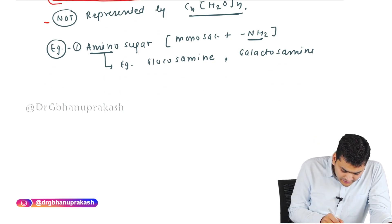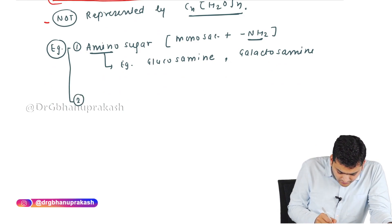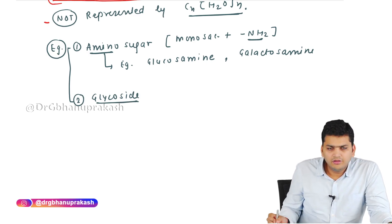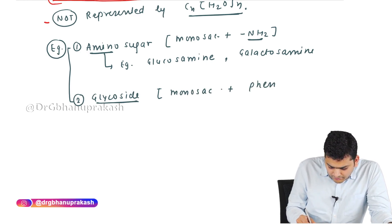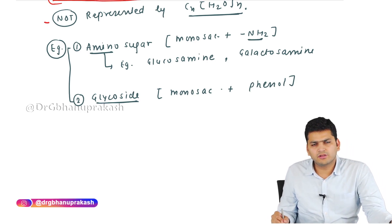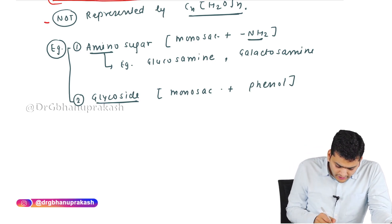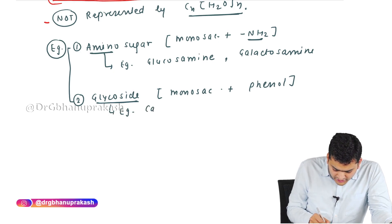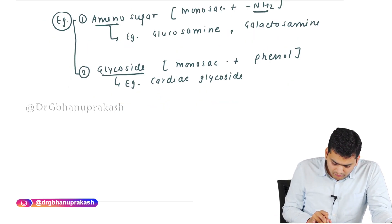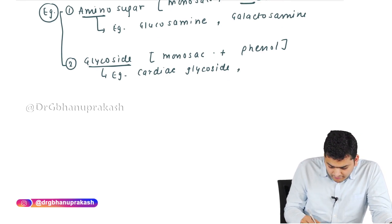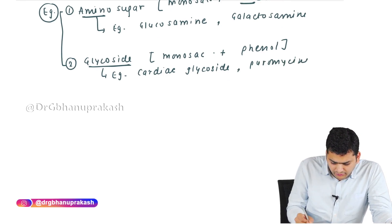The second example of derived sugar is glycoside. A glycoside is formed when a monosaccharide has a phenol group added to it. Examples of glycosides from pharmacology include cardioglycosides and aminoglycosides.